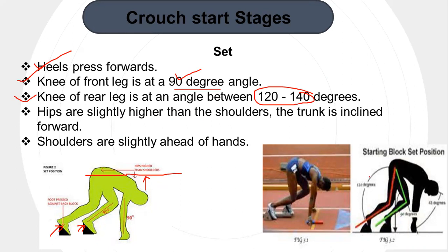This question has been asked in exams, so remember it. Looking at these angles: the rear knee angle should remain between 140 to 120 degrees, and the front knee angle should be around 90 degrees. The angle that the hands make with the midline — drawing it here — the midline going out like this, and the angle formed with it is written as 43 degrees on average, but it goes around 42 to 46 degrees. In the set position, the shoulders are slightly ahead of the hands that touch the ground.